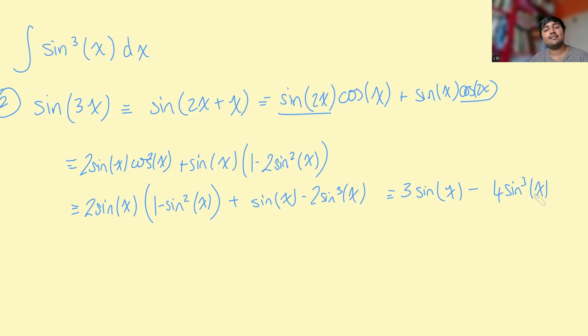So sine 3x is that. And so, therefore, if I rearrange this to give me sine cubed x, I get sine cubed x is the same thing as 3 sine x minus sine 3x all over 4.